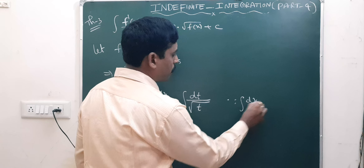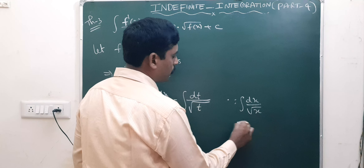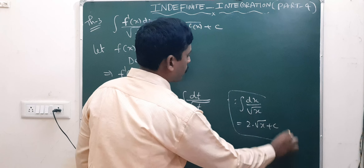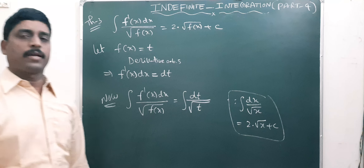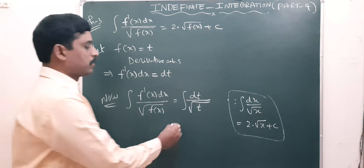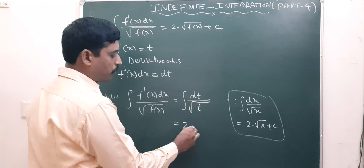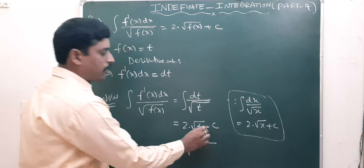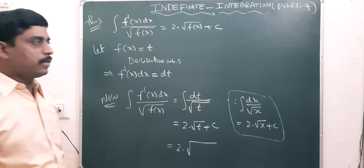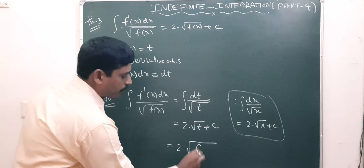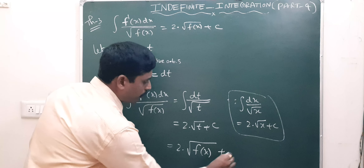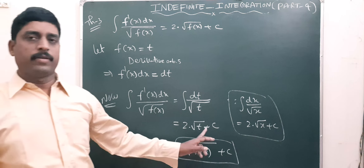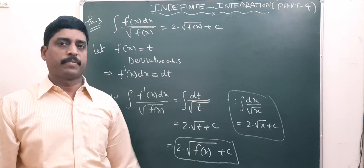One formula is: integral of dx by root x is equal to 2 root x. So integral of dt by root t is 2 root t plus c. In the place of t we write f(x), giving 2 root f(x) plus c.